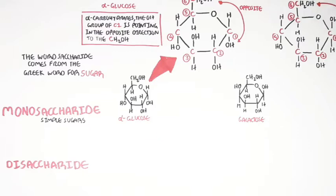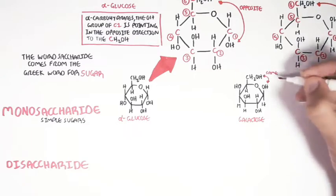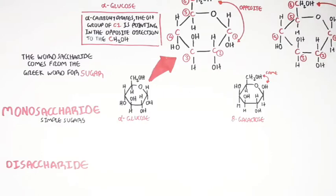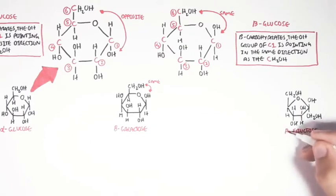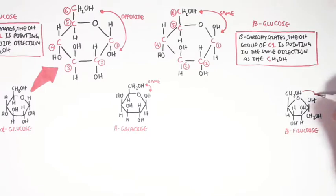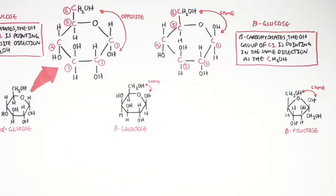This galactose molecule is actually a beta galactose because the hydroxyl group and carbon number 6 are pointing in the same direction. Similarly, this fructose is in a beta configuration — a beta fructose — because the hydroxyl group is pointing in the same direction as carbon number 6. So those are the 3 major monosaccharides in the human diet.